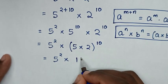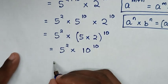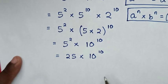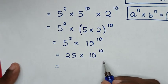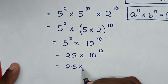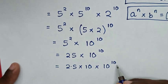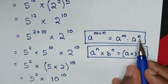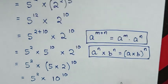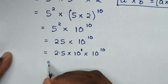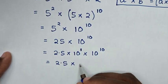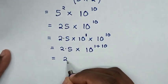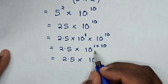Then in the next step, it will be equal to 5 power of 2 is 25, times 10 power of 10. Then, to write this in standard notation, 25 is the same as 2.5 times 10, so times 10 power of 10. This 10 is the same as 10 power of 1, so it will be equal to 2.5 times 10 power of 1 plus 10, which is 2.5 times 10 power of 11.